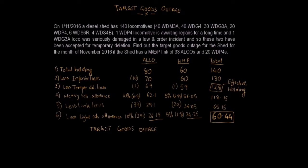Let us now try to understand what this figure means. This simply means that in addition to providing locomotives to all the link trains — which is 33 plus 20, that is 53 locomotives — the shed will also have to give out, on average at any point of time during the month of November 2016, 60.44 locomotives for goods service.